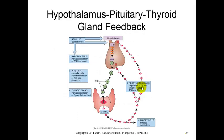Here is the hypothalamus-pituitary-thyroid gland feedback system. The hypothalamus connects the brain to the endocrine system. Typically some kind of nerve impulse, hormonal impulse, or stimulus - such as cold or stress - goes to the hypothalamus. In dealing with the thyroid, cold or stress is going to cause the hypothalamus to send thyroid releasing hormone TRH down to the anterior pituitary.